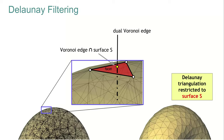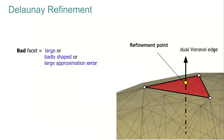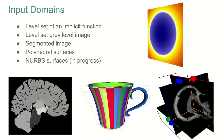Using this procedure, you can generate both a tetrahedral mesh and a surface triangle mesh — called a Delaunay triangulation restricted to your surface. A facet is considered bad if it is too large, badly shaped, or if the approximation error is too large. The approximation error is computed as the distance from the triangle to the intersection of its dual with the surface. This algorithm can generate meshes from images, polyhedral surfaces, and we have ongoing work to generate meshes from NURBS patches.